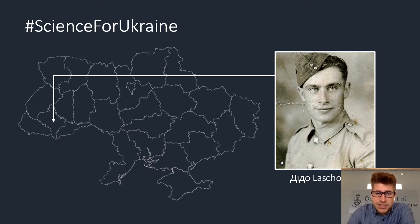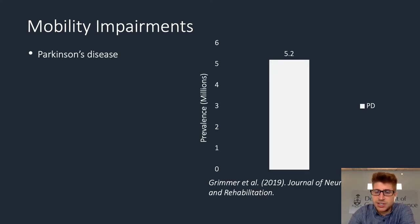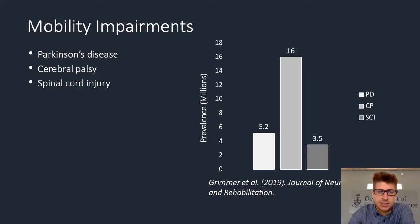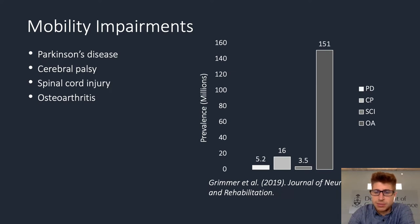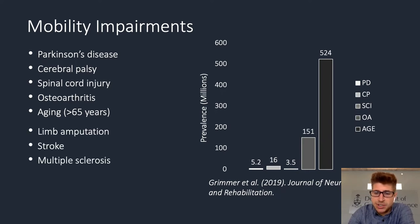To motivate my talk, there are currently hundreds of millions of individuals worldwide with mobility impairments due to conditions such as Parkinson's disease, cerebral palsy, spinal cord injury, osteoarthritis, and most notably aging. There are also conditions like limb amputation, stroke, and MS, although I don't present data for those here.